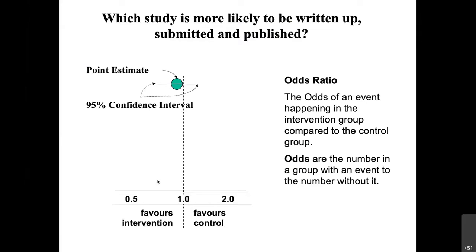We can use this type of diagram called a forest plot. The value one represents that the likelihood or odds of the outcome are no different between the control group and the intervention group. But if this blob and confidence interval are on this side, we say that the odds of the outcome are increased in the intervention group.